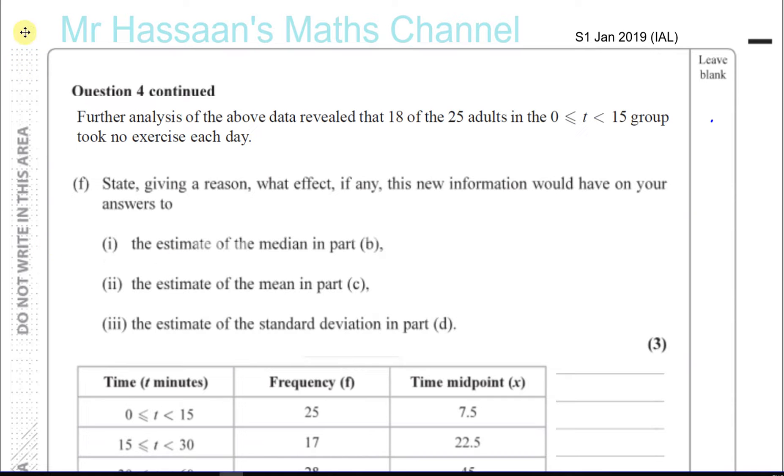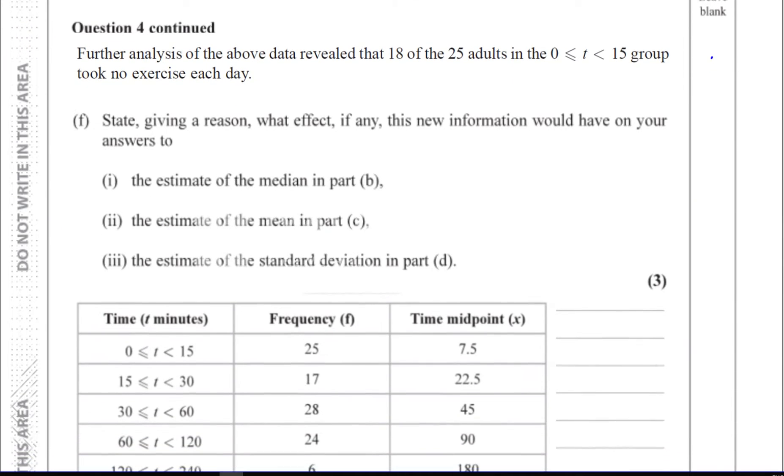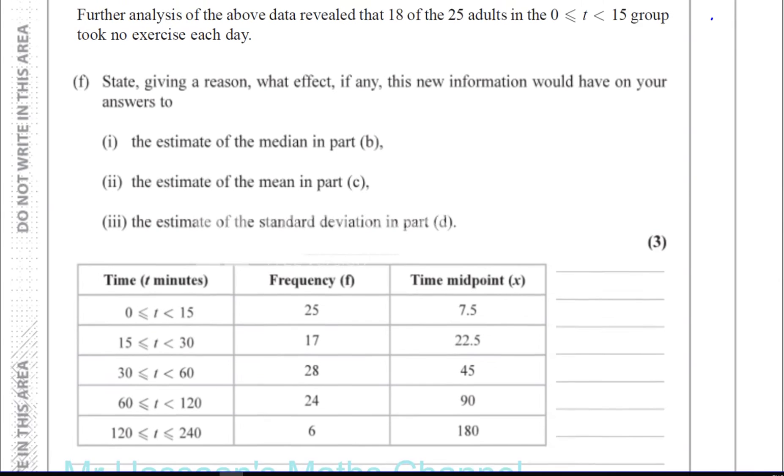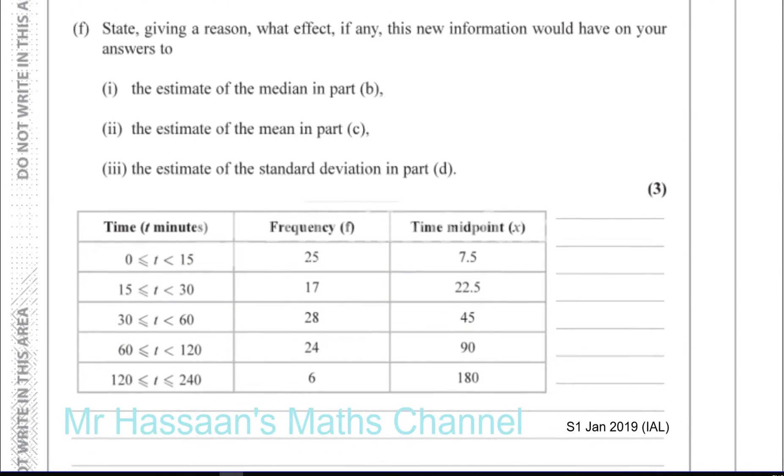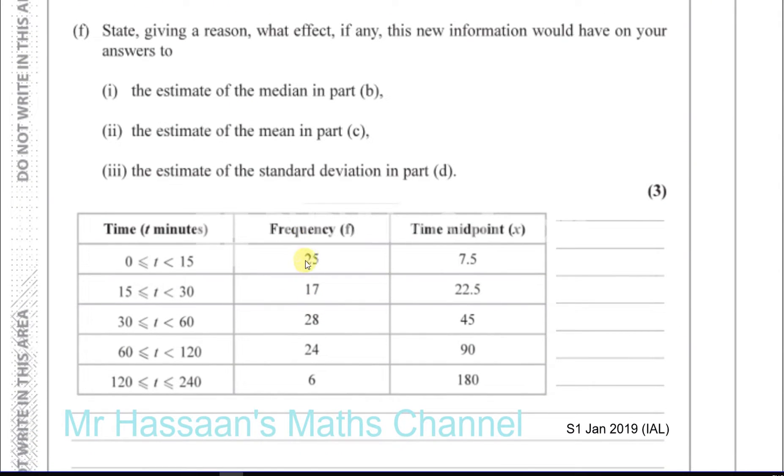What we can see here in this question is that 18 out of these 25 have got a time of 0. So out of these 25, 7 of them are left with a time between 0 and 15, which we estimate as 7.5, but 18 out of them have a time of 0 now. So basically, what's going to happen here for the median? Now, the median is the middle position.